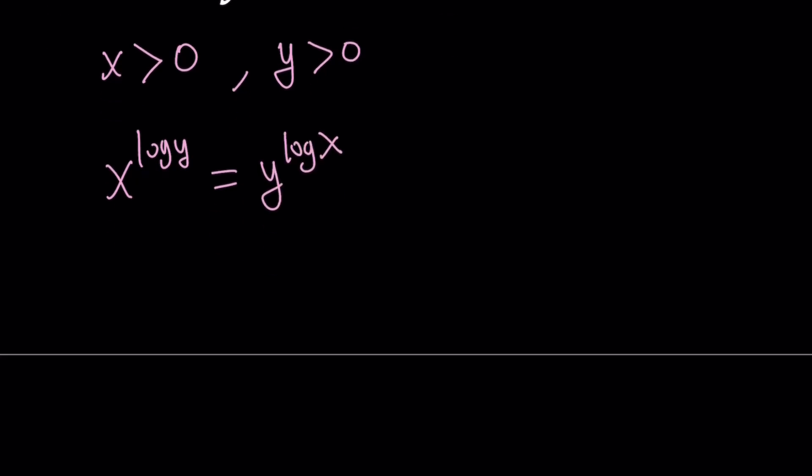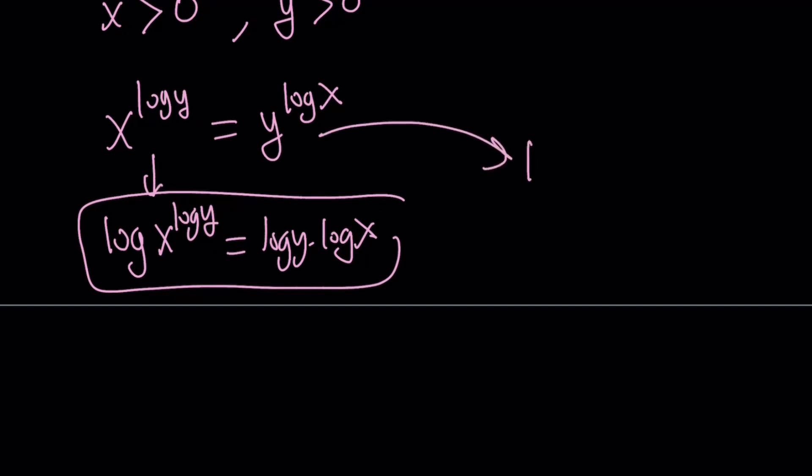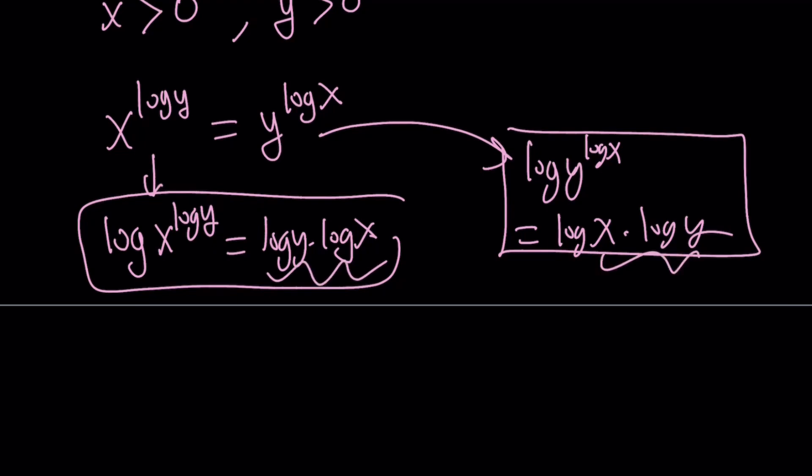Why are they equal? Because if you log each one, for example, if you log x to the power log y, you get log y times log x. If you log y to the power log x, you get log x times log y. And then I compare the results. The logs are equal, right? Therefore, the expressions are also equal because the log function is a bijection.